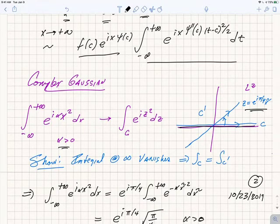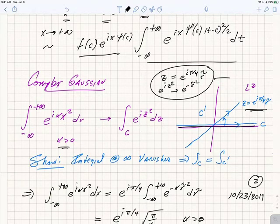If z equals e^(iπ/4)x̃, then e^(iz²) becomes e^(-x̃²). So that's why we want to rotate by 45 degrees.